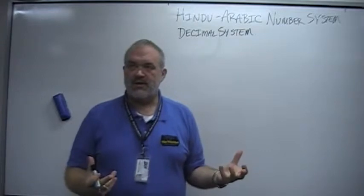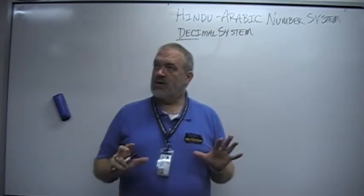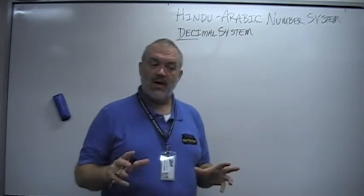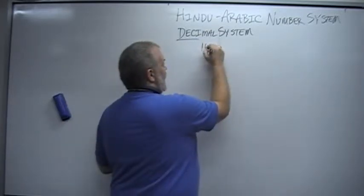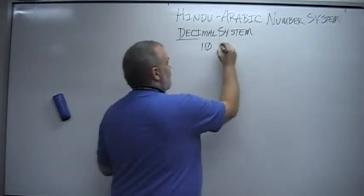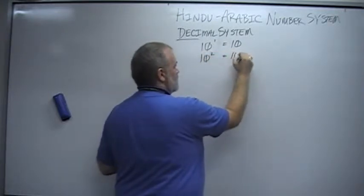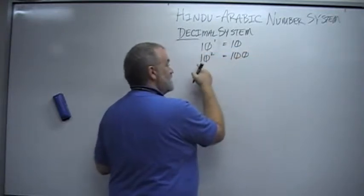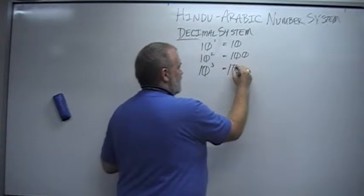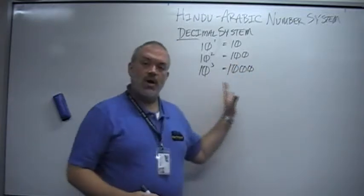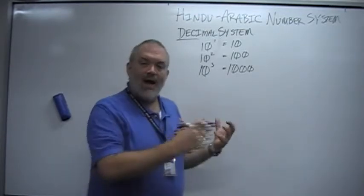We call it the decimal system because 'dec' is the prefix for ten. So the Hindu-Arabic system, or the decimal system, is based on powers of ten. What I mean by powers of ten is that we use ten to the first, which is equal to ten. We use ten to the second, which is equal to a hundred, in other words ten times ten. Ten to the third, which is equal to a thousand, and so on. We use those numbers, that decimal system, to describe numbers.